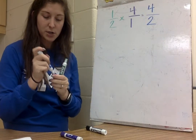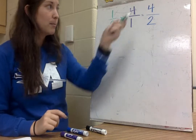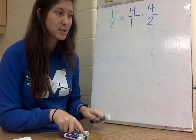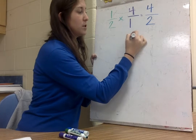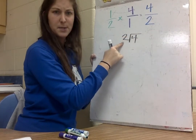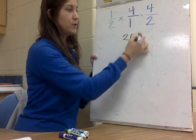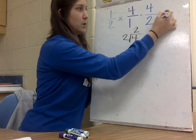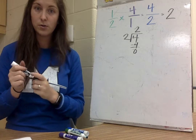Now I notice that 4 over 2 is an improper fraction — the numerator is bigger than the denominator. But I can solve this division problem: how many times can 2 go into 4? 2 can go into 4 two times, which gives me 4. So 4 over 2 is the same thing as 2.